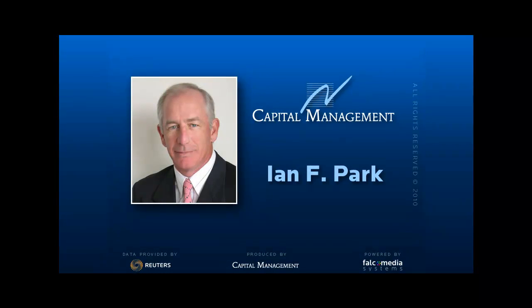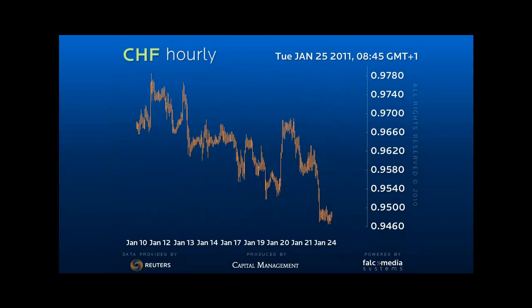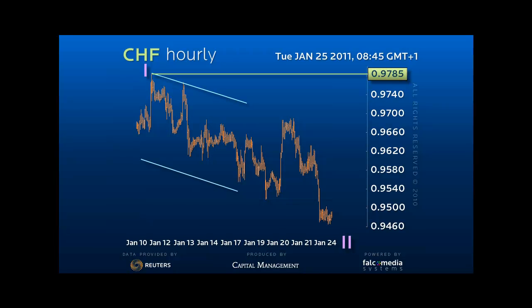Good day and welcome to the shorter term update on Dollar Swiss. A trend sequence completed at 97.85 and the decline since is corrective. It is holding a solid down channel, and having touched the channel bottom and also having easily achieved the 61.8% corrective target of 94.85 with the dip to 94.65, one could argue the correction is complete.